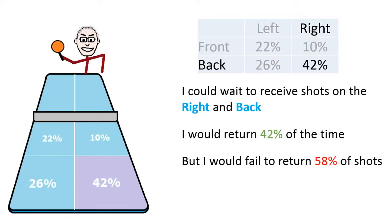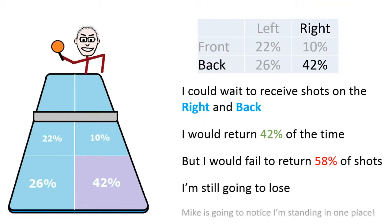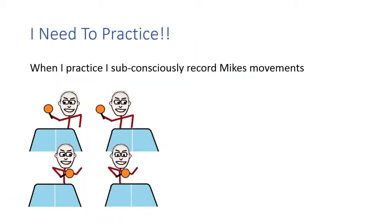But being a mathematician, I know that I now fail to return 58% of the shots. I'm still going to lose the game. And what's worse, Mike's going to actually notice that I'm just standing in one place waiting to receive those shots anyway. So how am I going to get over this?